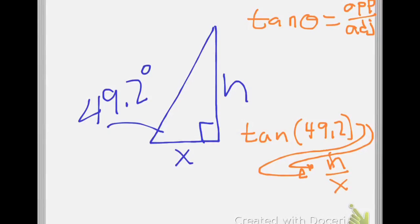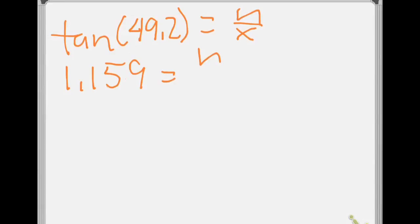We can set that up for each one of these. Let's set it up for this smaller triangle now. So the tangent of 49.2 is equal to h over x. What's the tangent of 49.2? Give me three decimal places. 1.159. That's equal to h over x.